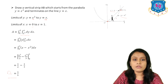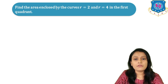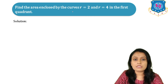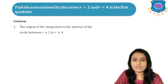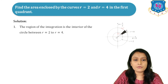This is the area bounded between the line Y = X and the parabola Y = X². Next example: find the area enclosed by the curves R = 2 and R = 4 in the first quadrant. This is an example in polar coordinates. The region of integration is the interior between the circles R = 2 and R = 4. We draw the circle R = 2 with radius 2 and R = 4 with radius 4, taking only the first quadrant.